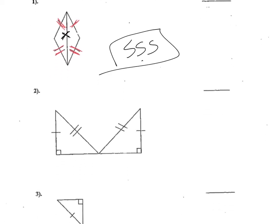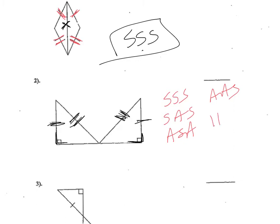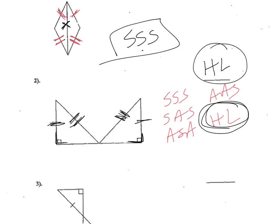In this case, there is a right angle here, so we have right triangles. These are both legs of the right triangle, and these are both hypotenuses. Considering my choices — SSS, SAS, ASA, AAS, or hypotenuse leg — it becomes clear that the only one that works here is hypotenuse leg. So I'm going to use hypotenuse leg for number two.